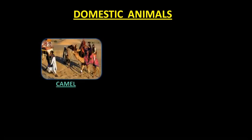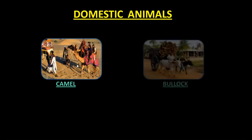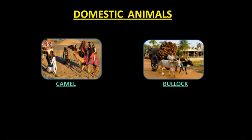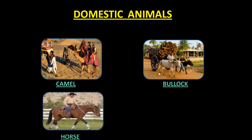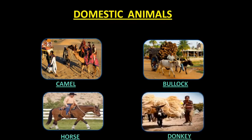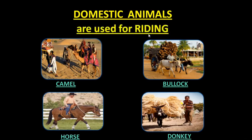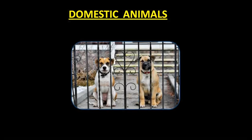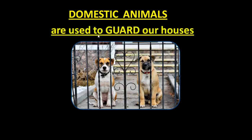Domestic animals like camel are used in the desert to carry people and goods from one place to another. In the same way, bullock carts are used in villages to carry people and goods. Similarly, horses and donkeys are also used for carrying people and goods. Domestic animals are also used to guard our houses — for example, dogs guard our house.